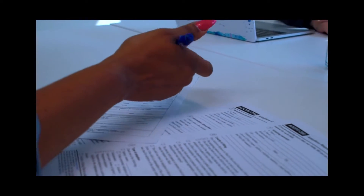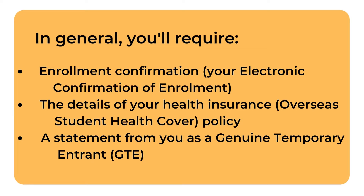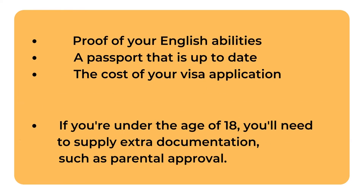In general, you'll require: enrollment confirmation, your electronic confirmation of enrollment, the details of your health insurance overseas student health cover policy, a statement from you as a genuine temporary entrant (GTE), proof of your English abilities, a passport that is up to date, and the cost of your visa application. If you're under the age of 18, you'll need to supply extra documentation, such as parental approval.